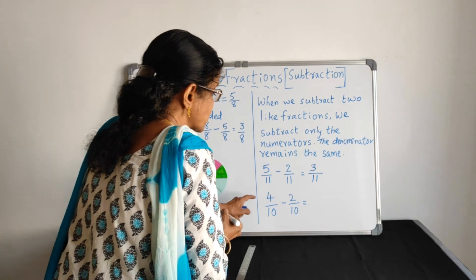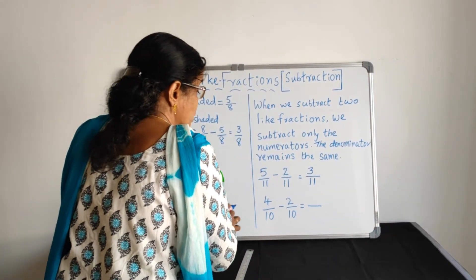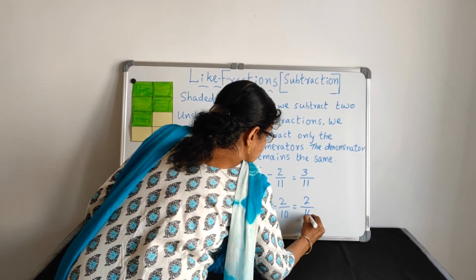Okay. Give the next answer. Denominator there is no change. Only you have to subtract the numerator. 4 minus 2. So, 2 by 10.